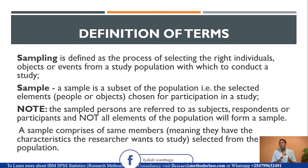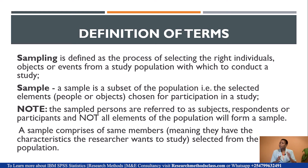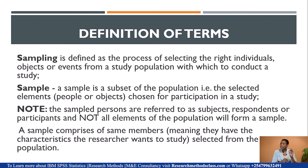We sample from the accessible or study population, which must be the accessible target population. When we talk about a sample, it is a subset of the population — the selected elements chosen for the study. These elements are referred to as subjects, respondents, or participants. The single member of a population is referred to as an element, while the single member of a sample is referred to as a subject. Not all elements of the population will form the sample.